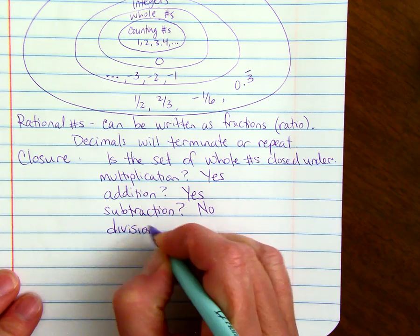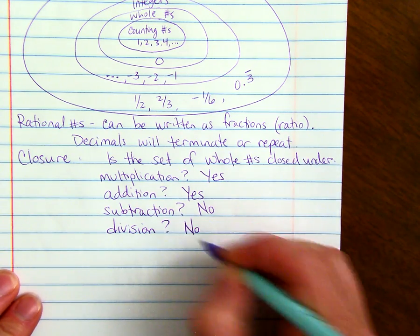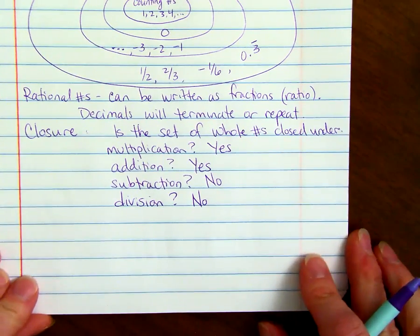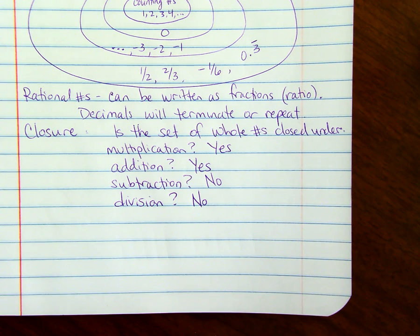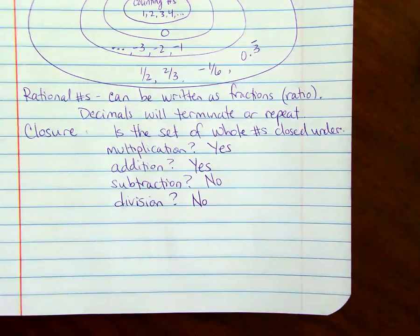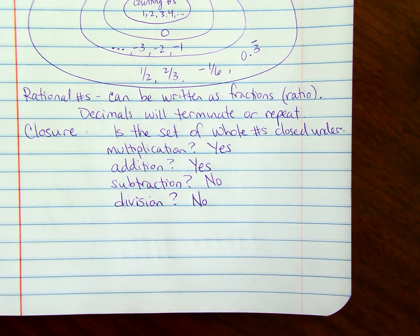And division, it's not closed with division, because you could then get a fraction. If you did one divided by three, that is no longer a whole number. It is one-third that becomes a rational number, so it's not closed.